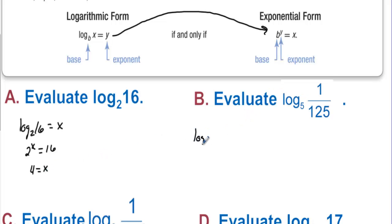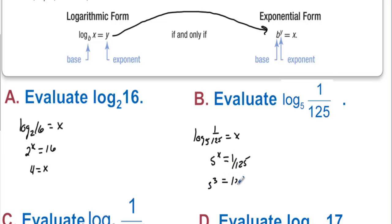Evaluate log base 5 of 1 over 125. That equals some number, so we change to exponential form: 5 to some value equals 1 over 125. Well, 5 to the 3rd is 125, so 5 to the negative 3rd is equal to 1 over 125. So x in this case is equal to negative 3.